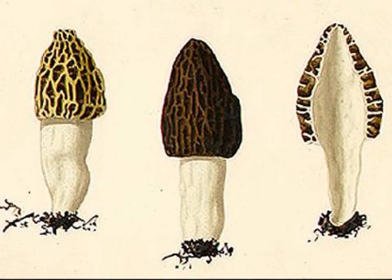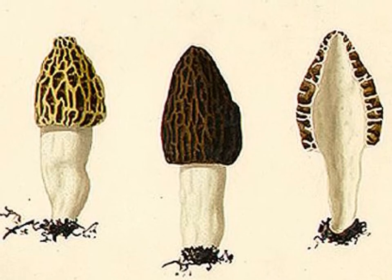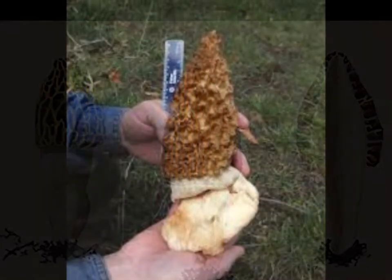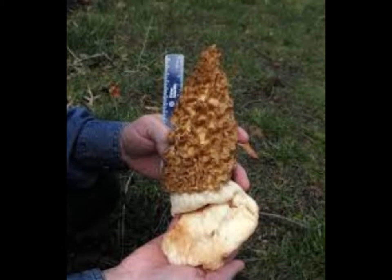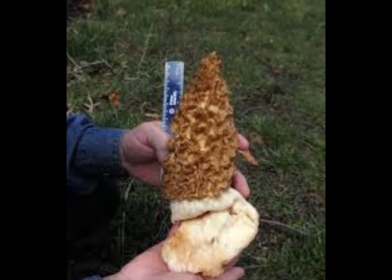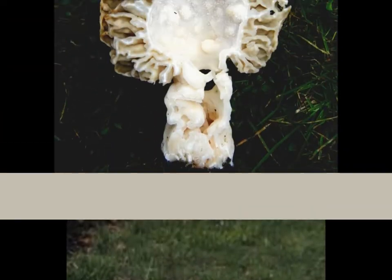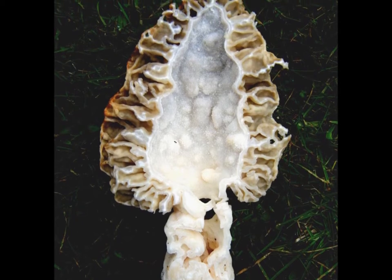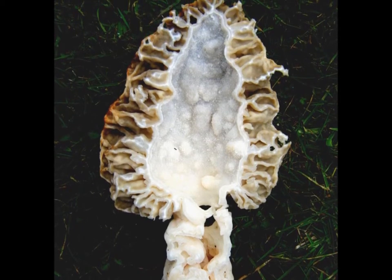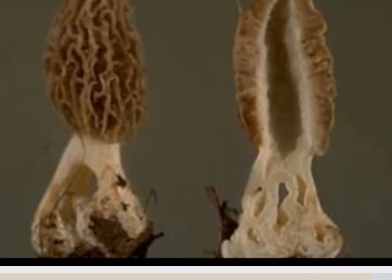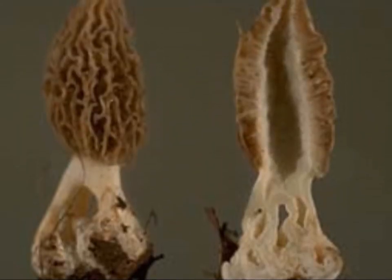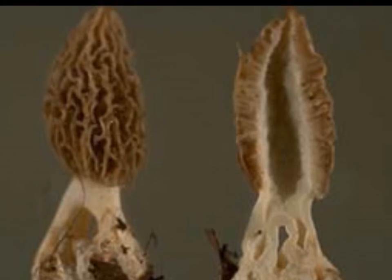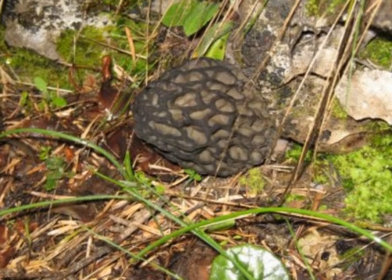One way to be sure if you have a true morel is to look at the mushroom after you cut it in half lengthwise. The cap of the true morel is attached to the stem for its entire length. False morels have caps that are separate from the stem at the bottom, so they look more like an actual cap sitting on top.